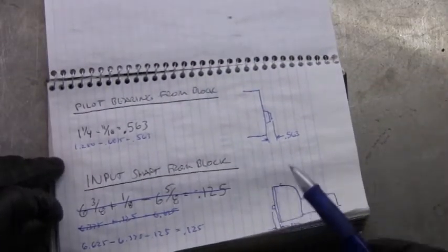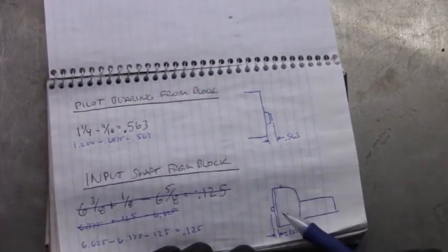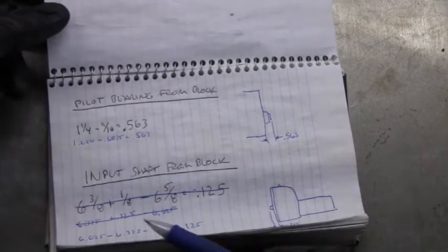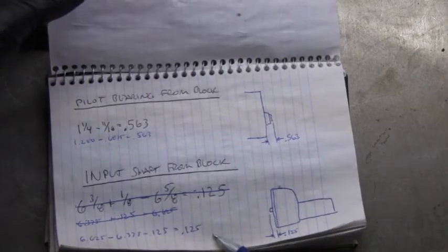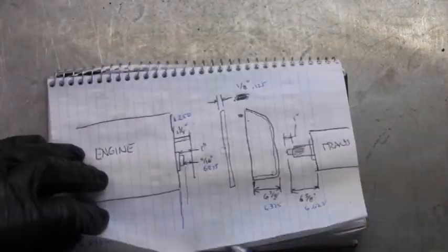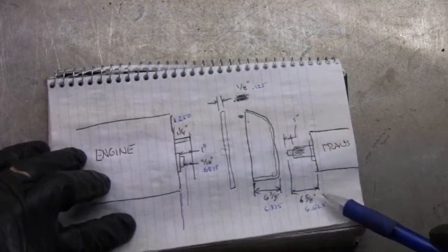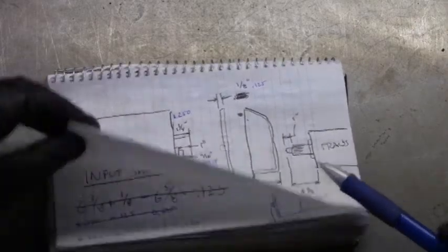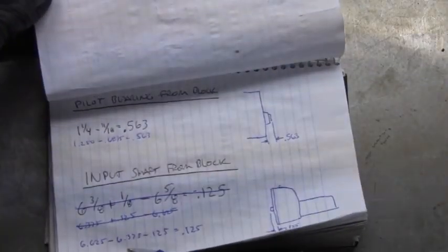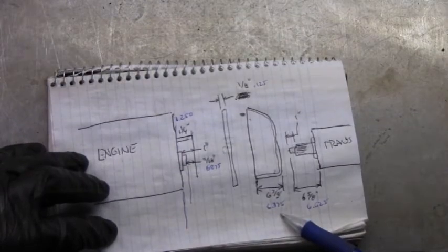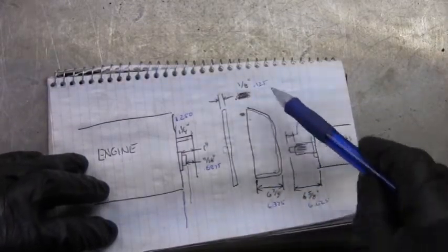Then for the input shaft and where it is to the back of the block, I redid this here so that it makes more sense in the order that I did this. The length of the input shaft is 6.625. I subtract the depth of the bell housing, 6.375, and then this protector plate at 0.125.